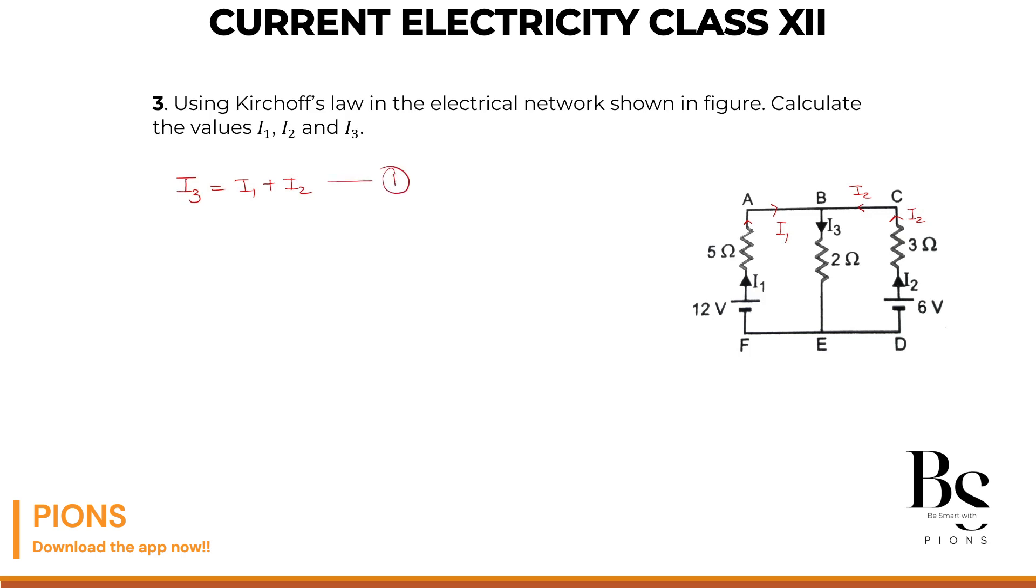Let's consider the loops. I am considering the first loop as A, B, E, F, A. In this loop, I always go from positive to negative terminal. So what is the battery voltage? 12V, and that equals to, while going from A to B, there is no resistor, nothing.